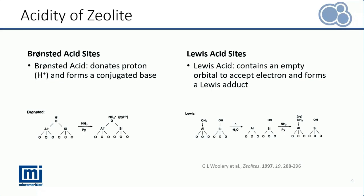The Lewis acid, by definition, contains an empty orbital to accept an electron to form a Lewis adduct. In the schematic, it is the aluminum atom after dehydration accepting the lone pair from ammonia to form a bond. These acid sites are crucial to characterize in order to optimize the catalytic activity of interest. We would like to obtain information such as the concentration of each acid site, the overall acidity of the solid, and the binding strength of these sites.